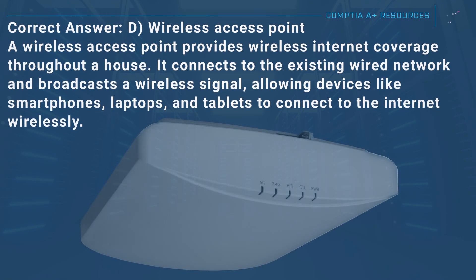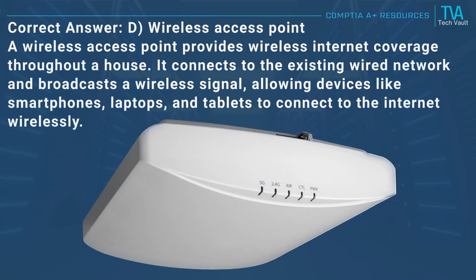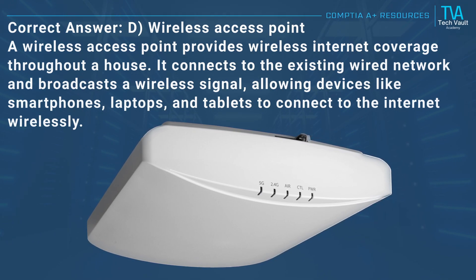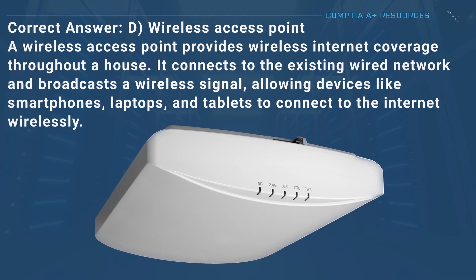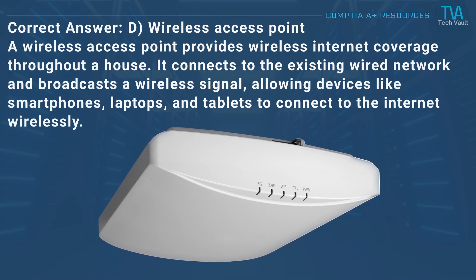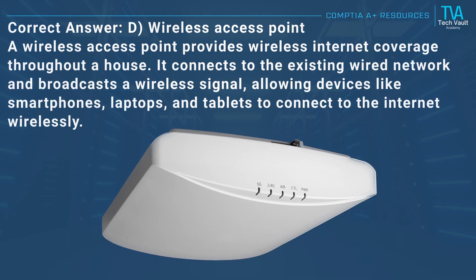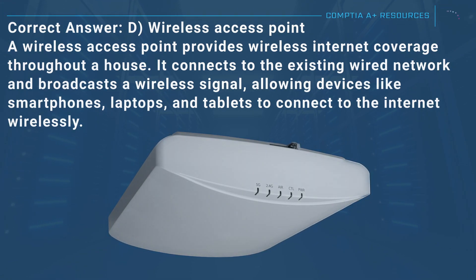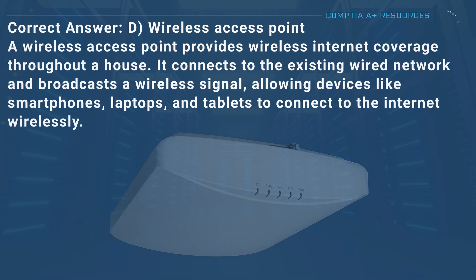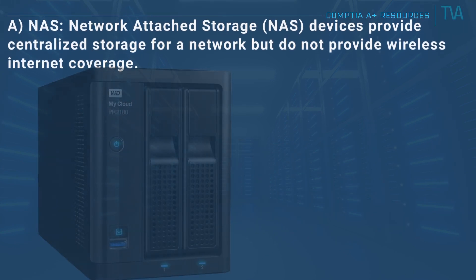Correct answer: D, wireless access point. A wireless access point provides wireless internet coverage throughout a house. It connects to the existing wired network and broadcasts a wireless signal, allowing devices like smartphones, laptops, and tablets to connect to the internet wirelessly.